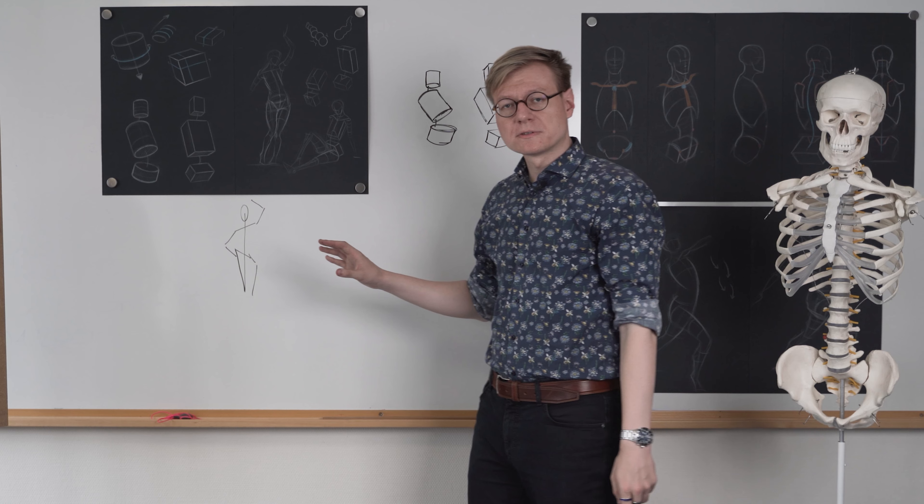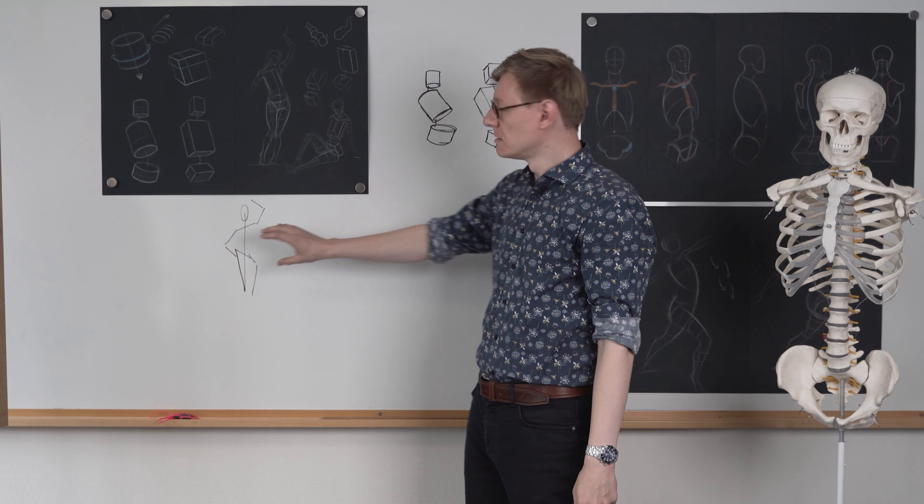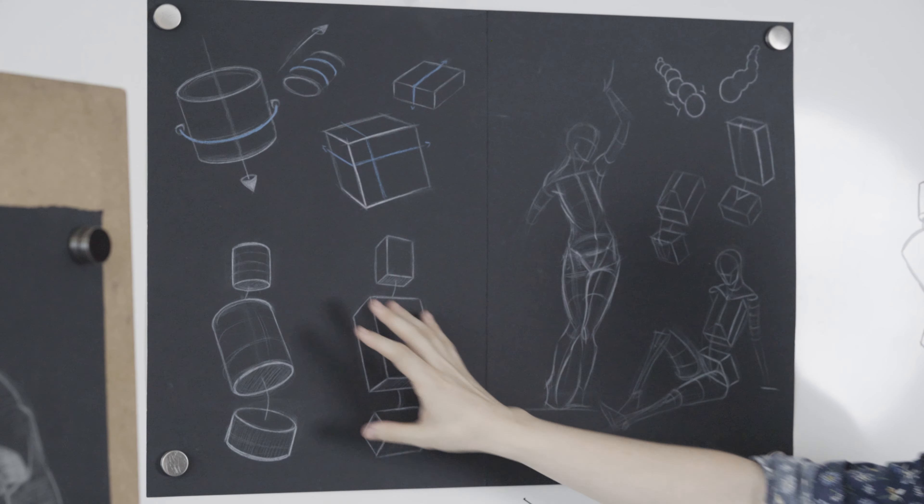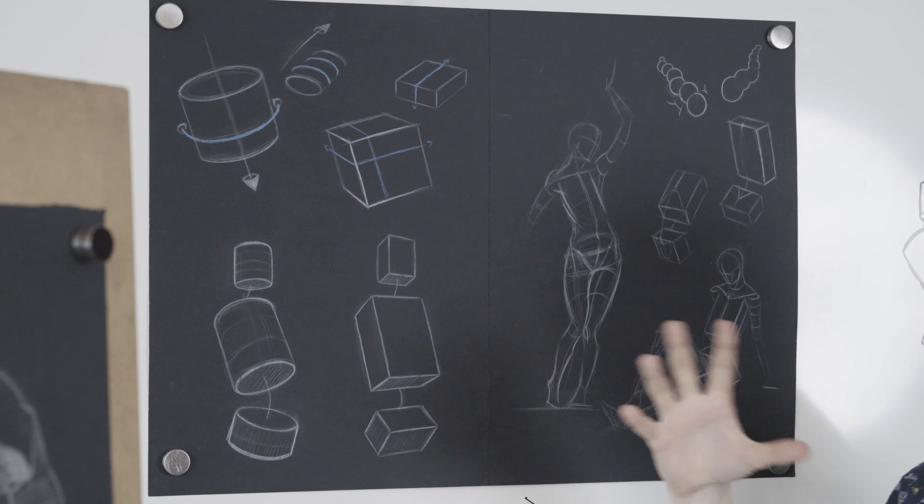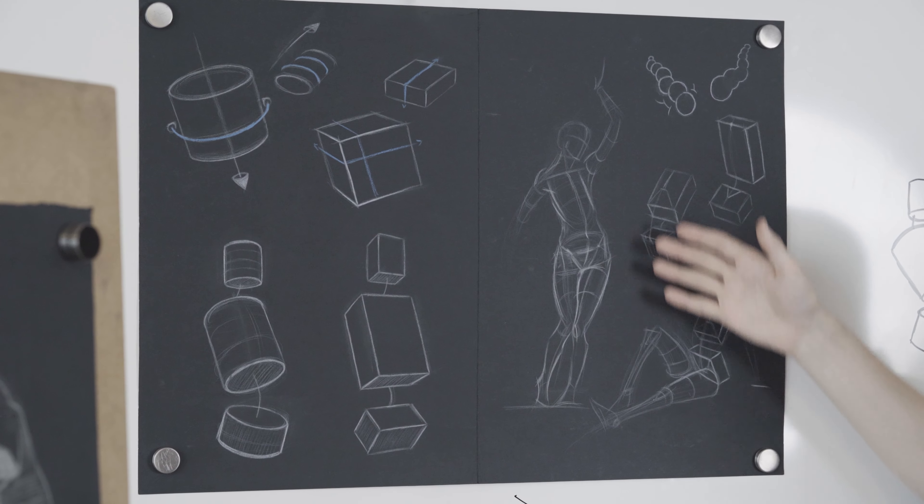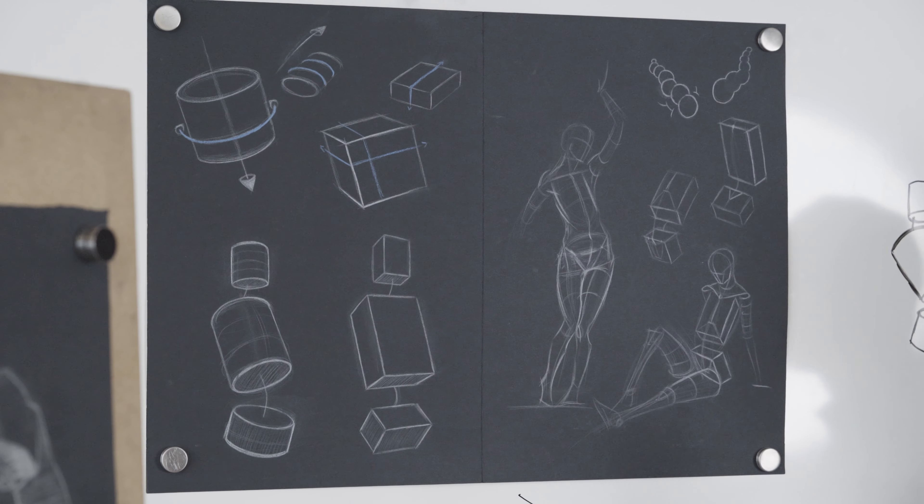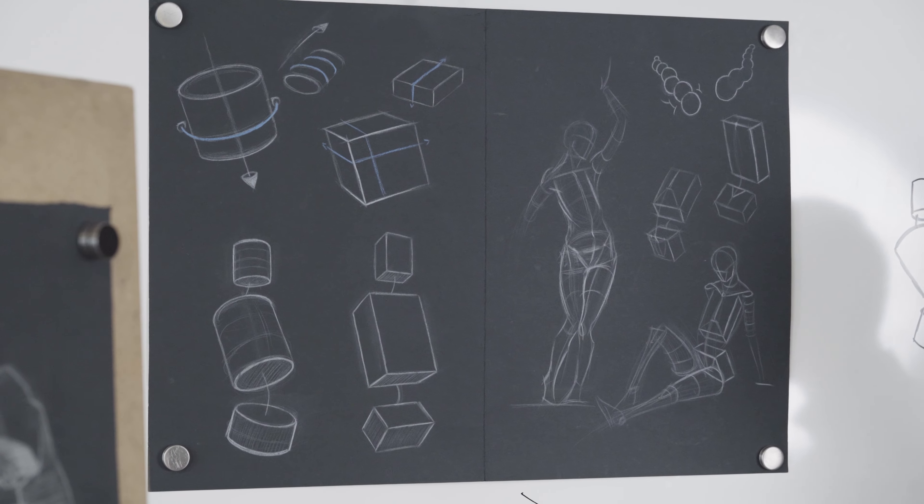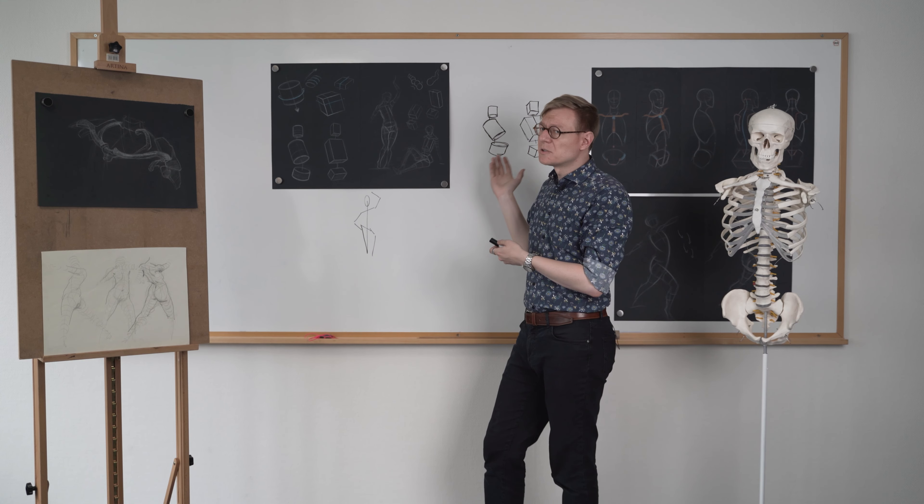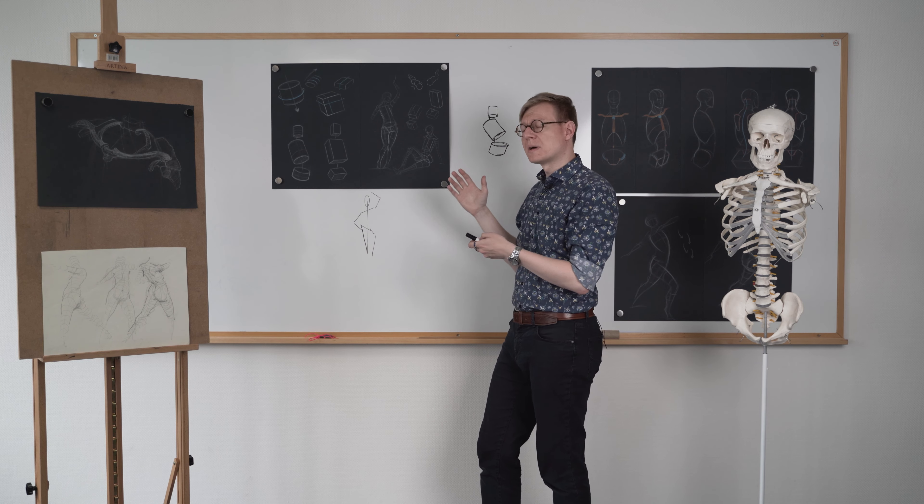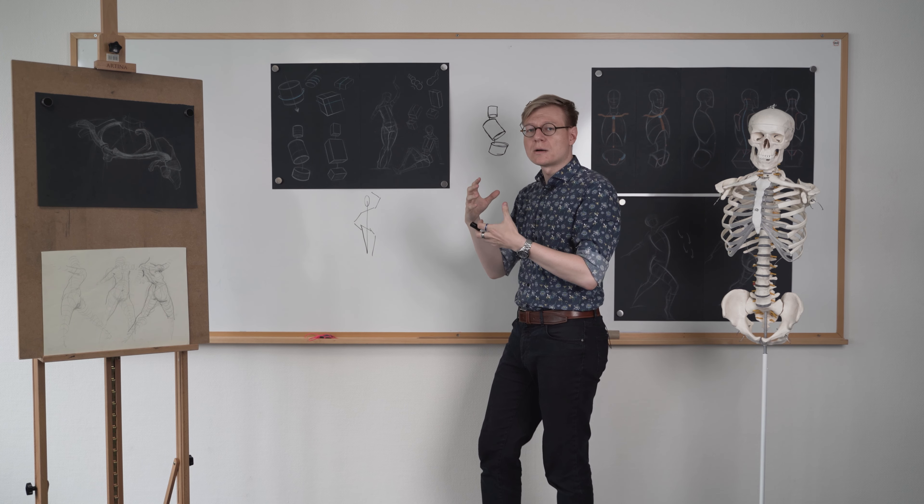We can now transfer these concepts of tilt, lean and turn into our figure drawing. If we use these designs and combine them into our gesture drawings or figure drawings, we can use these to create volume and spatial relationships of the human body. These are exercises and you don't have to draw this way, but they can inform your practice and help you thinking about the body as a three-dimensional object in space.